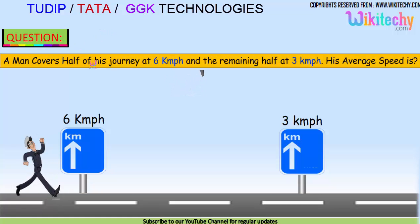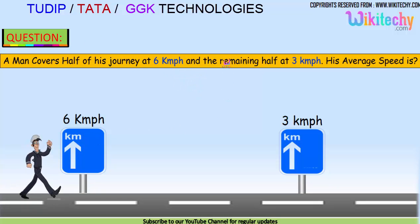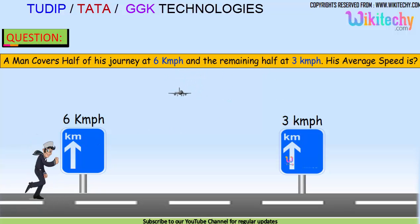A man covers half of his journey at 6 km per hour and the remaining half at 3 km per hour. What is his average speed?